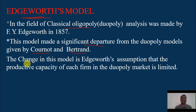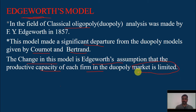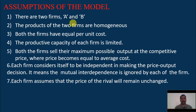The key change in this model is Edgeworth's assumption that the productive capacity of each firm in the duopoly market is limited. As with Bertrand and Cournot models, it is also assumed that there are two firms and the products of the two firms are homogeneous. Both firms have equal per unit cost — the cost of production is the same for both firms.